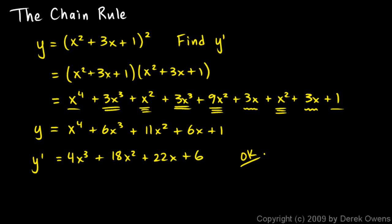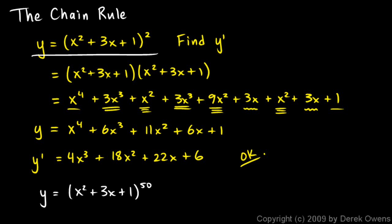Not too bad. But what if you had to do something like this — what if instead of y equals (x squared plus 3x plus 1) squared, you had y equals (x squared plus 3x plus 1) to the power of 50? That would take weeks or months, and one mistake would throw you completely off. It would just be a horrendous number of tedious calculations. So that raises the question: isn't there a better method? And there is.